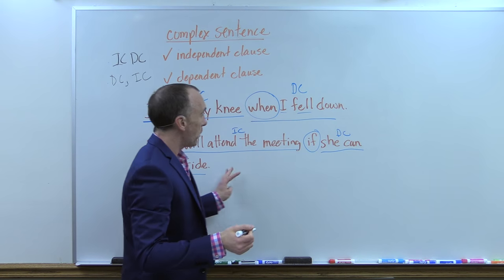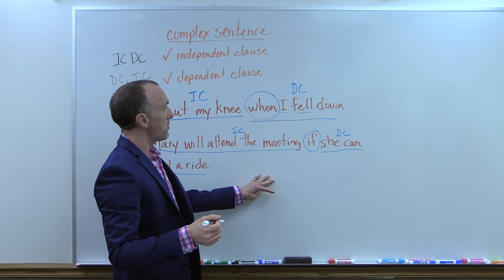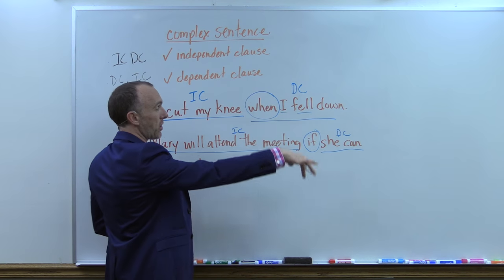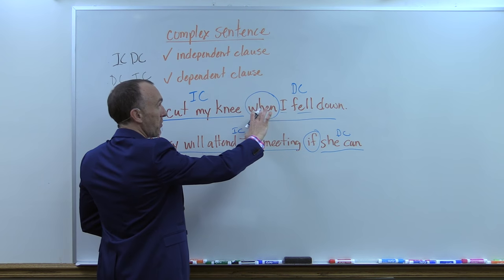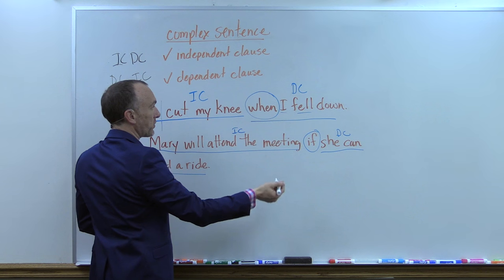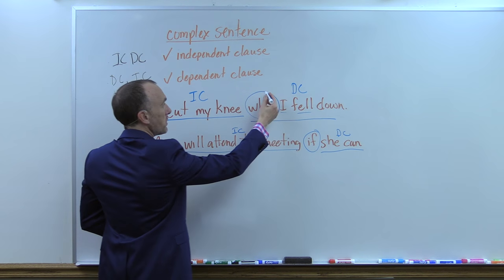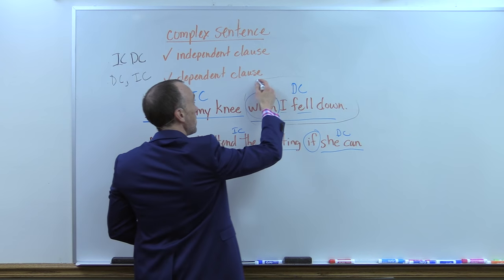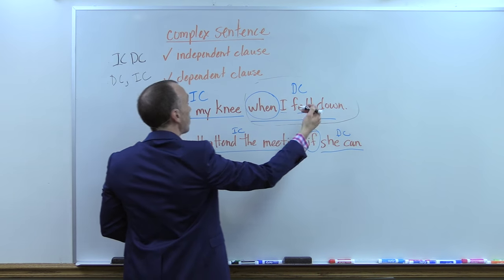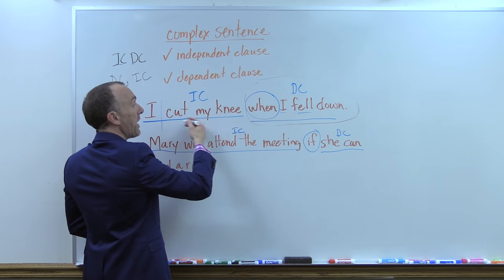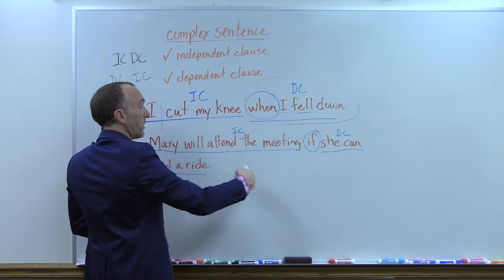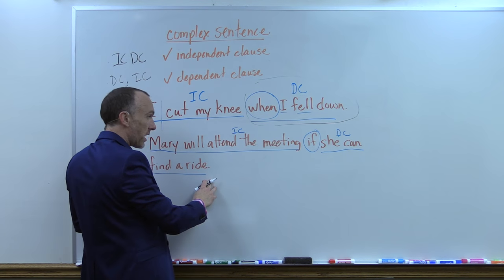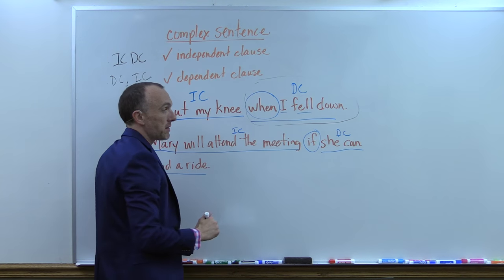I want to show you the sentences from the last lesson and how they would appear in the dependent clause followed by independent clause format. In this case, the sentence would read: 'When I fell down,' comma, 'I cut my knee.' This next sentence would say: 'If she can find a ride,' comma, 'Mary will attend the meeting.'